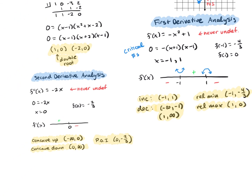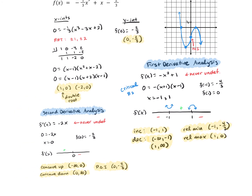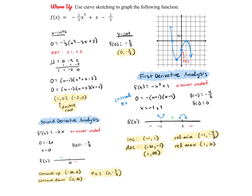We can move on to our second derivative analysis. The second derivative is never undefined, so we find when it equals 0, which occurs at 0. The sign analysis tells us the graph is concave up to the left of 0 and concave down to the right of 0. Because it is changing concavity, the point (0, -2/3) is our point of inflection. Putting all of that together, you get a nice polynomial graph that looks just like this.